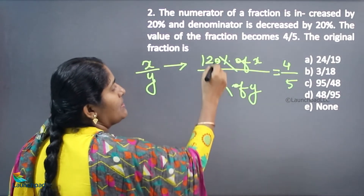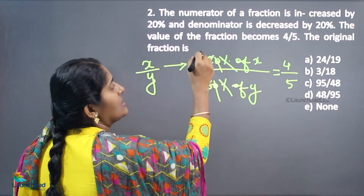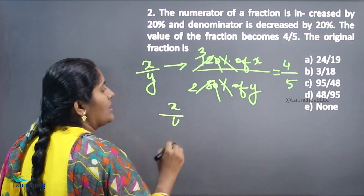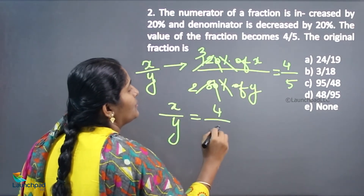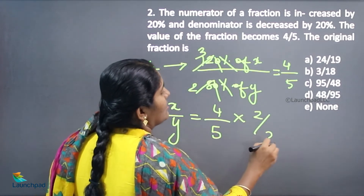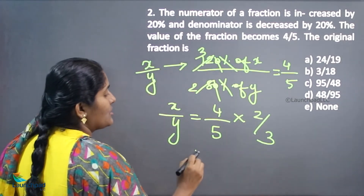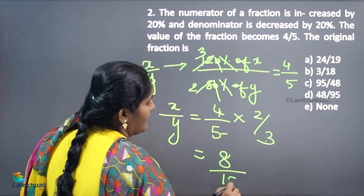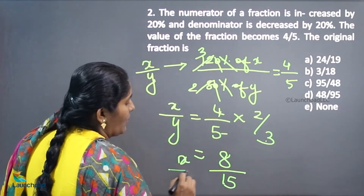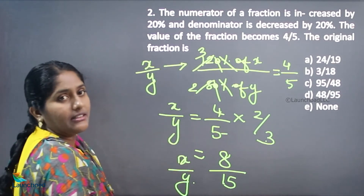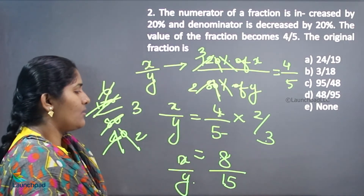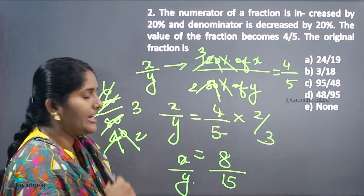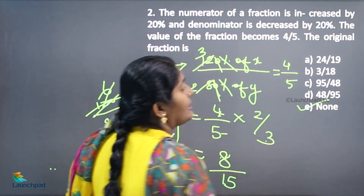Cancelling the percentages and zeros, x by y equals 4/5 multiplied by 80/120. Simplifying: 4 times 2 is 8, and 5 times 3 is 15. So x by y equals 8 by 15. Hence the original fraction is 8 by 15, and your answer is option E — none of these.